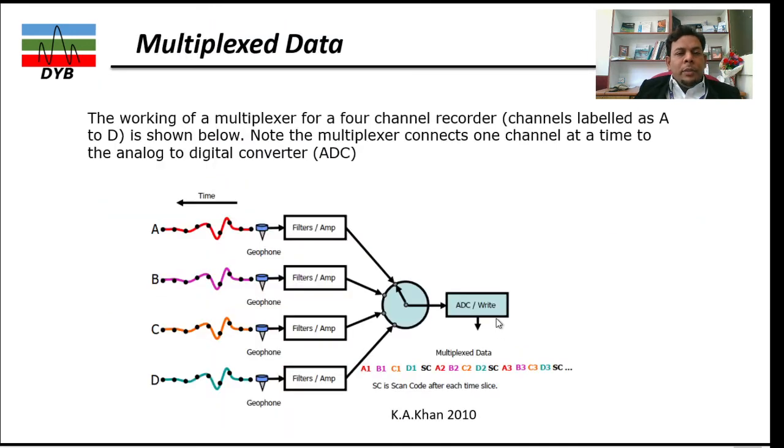What is multiplex data about? When we have the geophone, in case of four channels, one geophone, second, third and fourth. If you are recording the seismic trace, this trace is recording A1 which belongs to A, B1 belongs to B, C1 belongs to C, and D1 belongs to D. Once this data is recording, it's recording A1, B1, C1, D1.